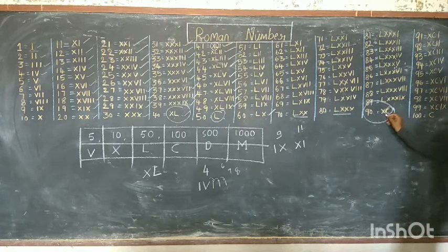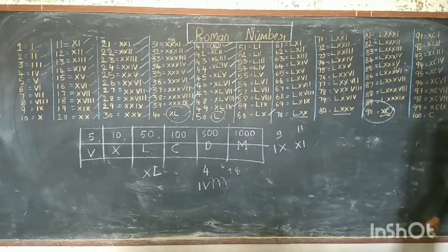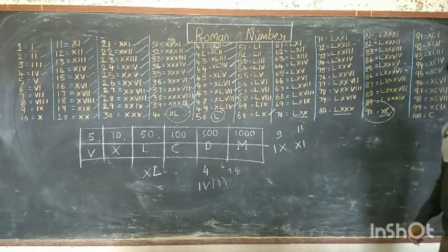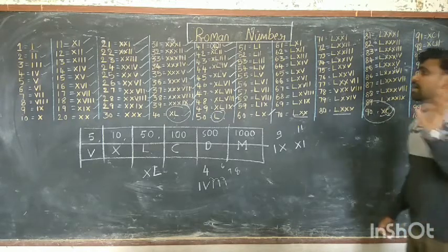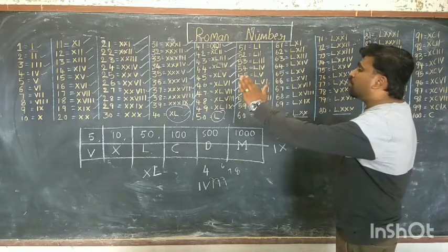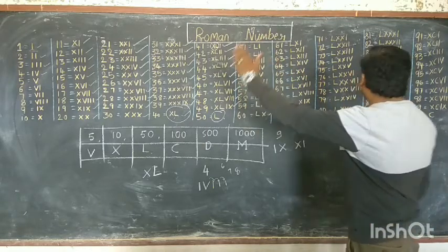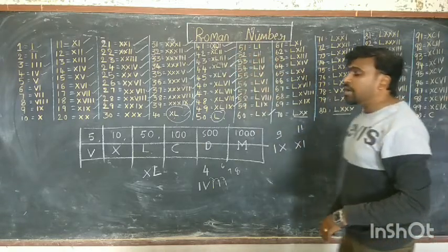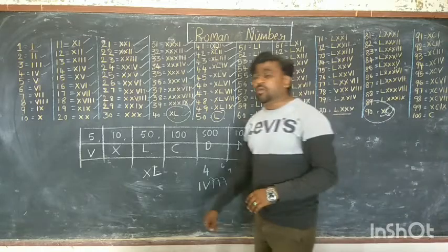C means 100. For 90, it becomes 100 minus 10. You have to neatly complete the Roman numbers from 1 to 100 in your classwork.